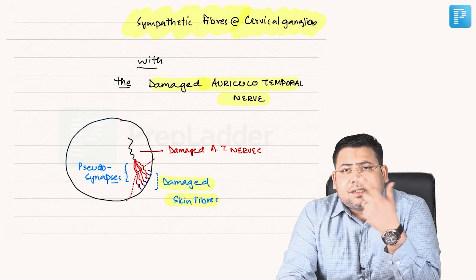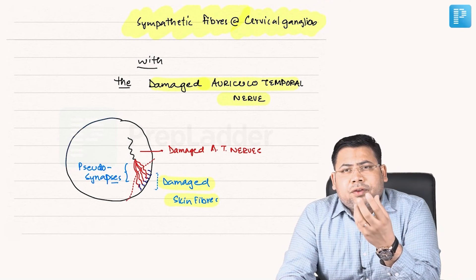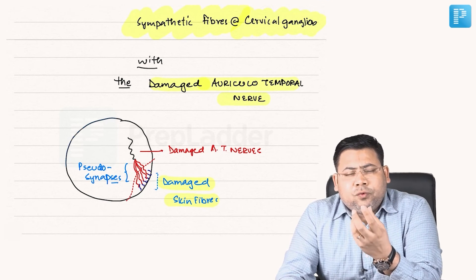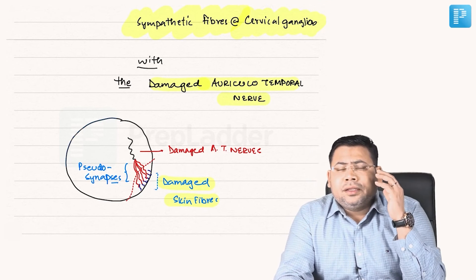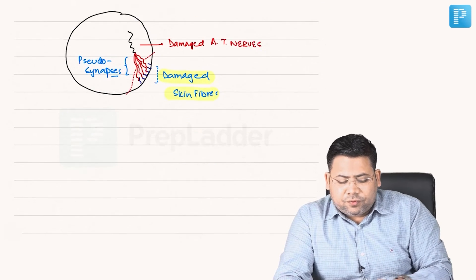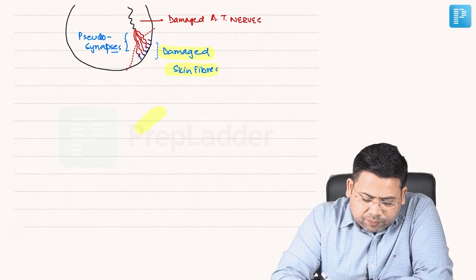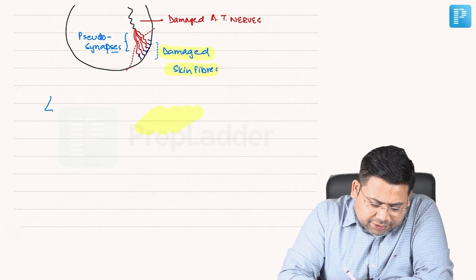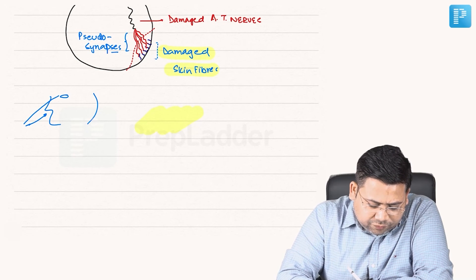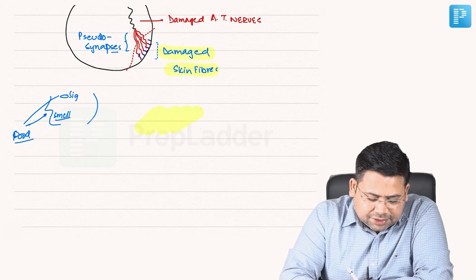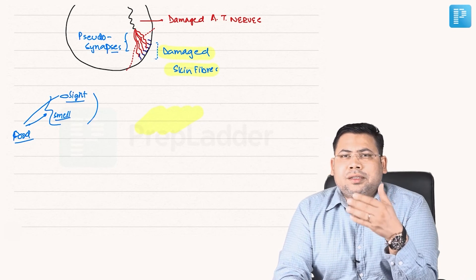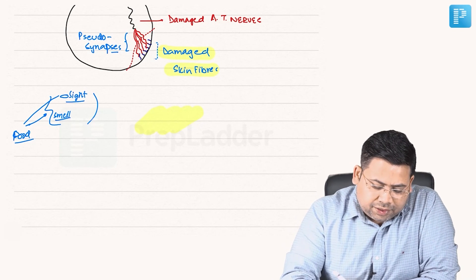That is the reason why whenever there is a sight or smell of food, the sensation is carried to the inferior salivatory nucleus or superior salivatory nucleus. Whenever there is a sight or smell of food, the sensation is relayed to the salivatory nucleus.